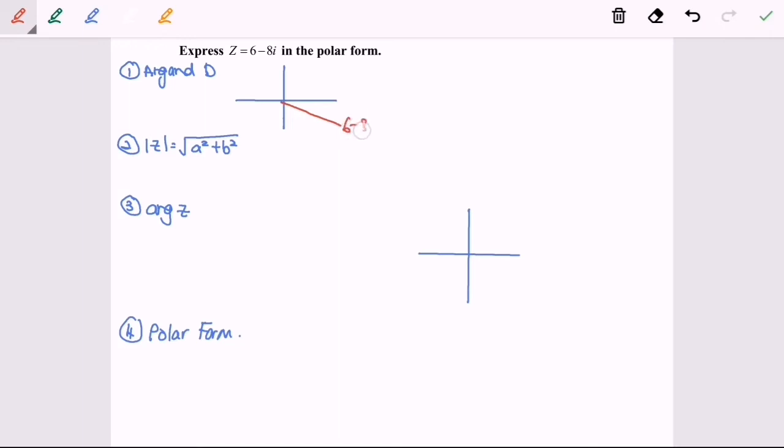So 6 minus 8i. This one is theta, imaginary part, real axis.